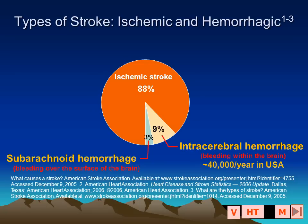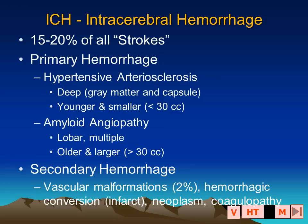Intracerebral hemorrhage is a small subset of all the lesions that are called stroke, representing between 10 and 20 percent of stroke and occurring at a rate of about 40,000 per year in the United States.